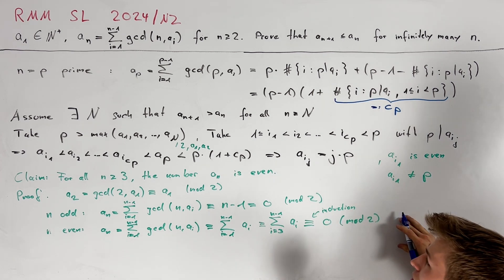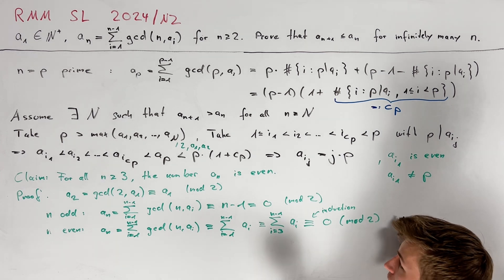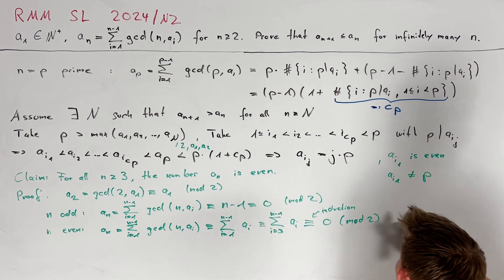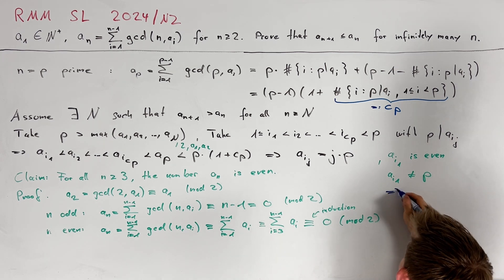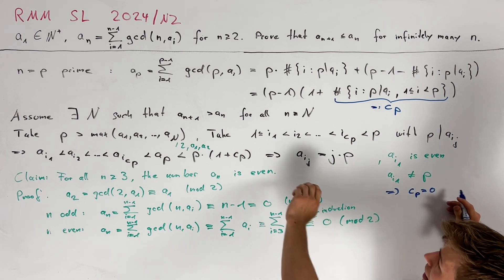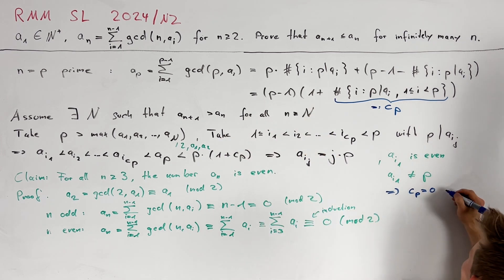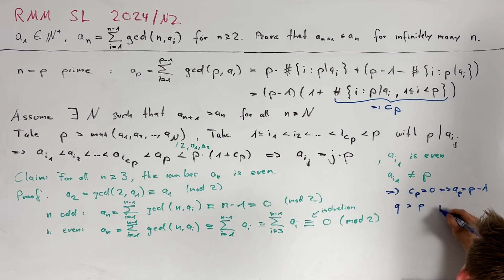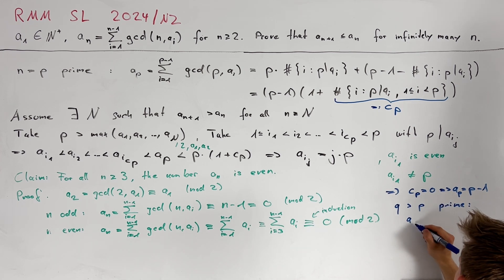This is still not quite a contradiction because there is the case left that c_p is equal to 0 so the index i_1 just doesn't exist and therefore we can conclude from this argument that c_p is equal to 0 and now taking a look at the value of a_p we directly get that a_p is equal to p minus 1. Doing the same argument for some prime number q greater than p we also get that a_q is equal to q minus 1.